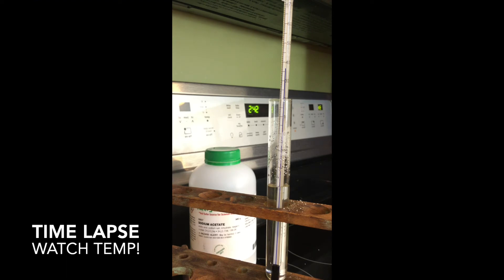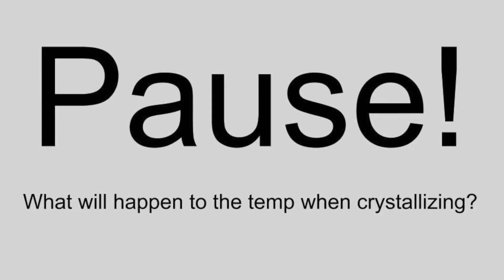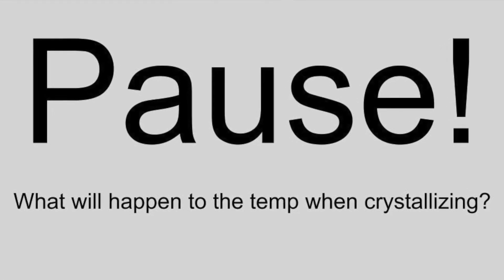So at this stage, this solution is supersaturated. It's holding more than it should. We have let it cool down for 23 minutes. And at this stage, I'm going to sprinkle in some seed crystals. What I need you to do is make a prediction. As it goes from liquid to solid when it crystallizes, what will happen to the temperature?